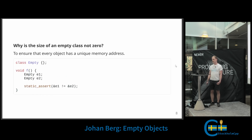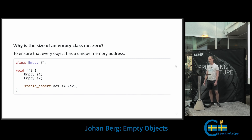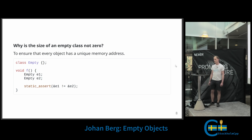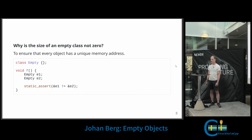So why is the size of an empty class not zero? It's to ensure that every object has a unique memory address. If we allocate two empty objects on the stack they will never end up at the same address.